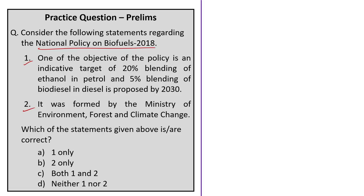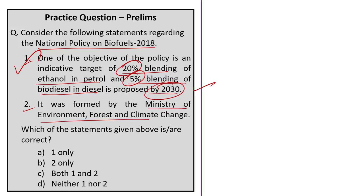The next question is based on the National Policy on Biofuels 2018. Statement one is correct — the indicative target is 20 percent blending of ethanol in petrol and 5 percent blending of biodiesel in diesel by 2030, as discussed. Statement two is wrong because the policy was formed by the Ministry of Petroleum and Natural Gas, not the Ministry of Environment, Forest and Climate Change. So the correct answer is option A — statement one only.